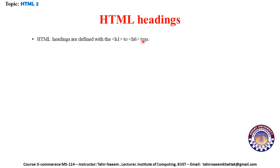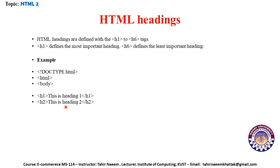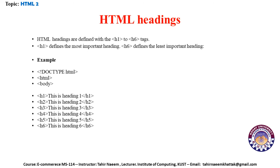HTML headings are defined with the h1 to h6 tags. H1 defines the most important heading, while h6 defines the least important heading. Here is an example: DOCTYPE HTML, then HTML, then body, then h1 'This is heading one', h2 'This is heading two', h3 'This is heading three', h4, h5, h6, then close body and HTML.